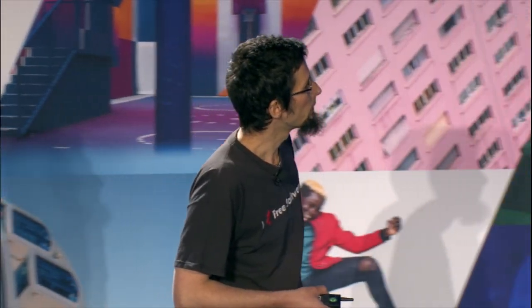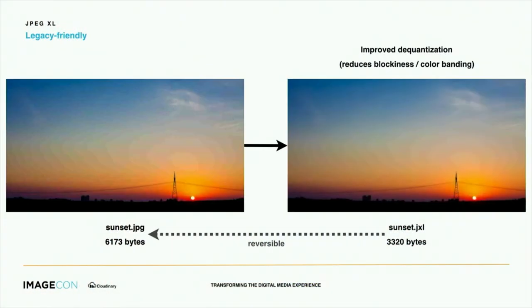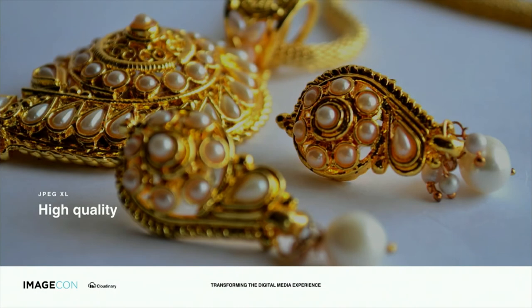We can even somewhat improve the quality of the result because you can apply more modern decoding techniques that legacy JPEG decoders don't have, and render the information in a more advanced way. If you look at the comparison — it's flipping between the two — it's a bit subtle, but it should look a bit better.